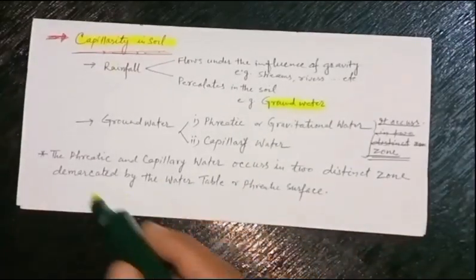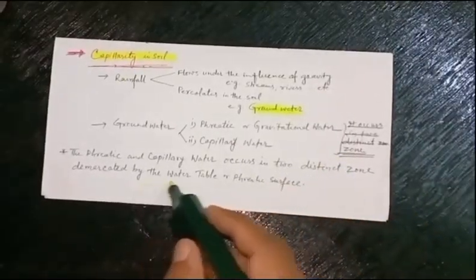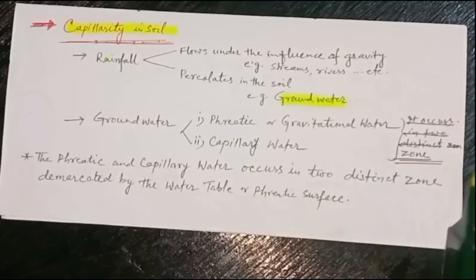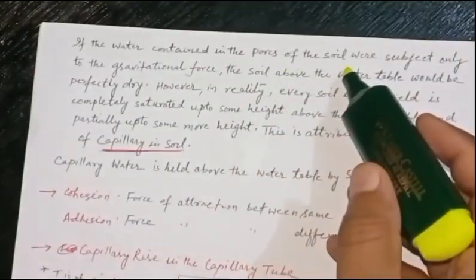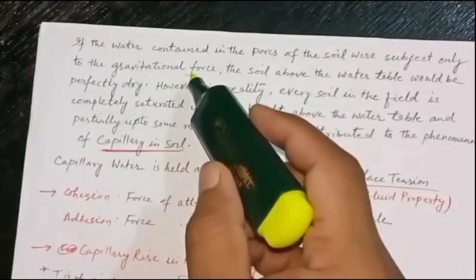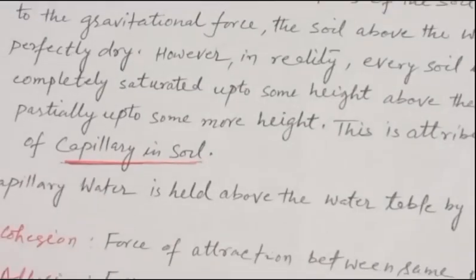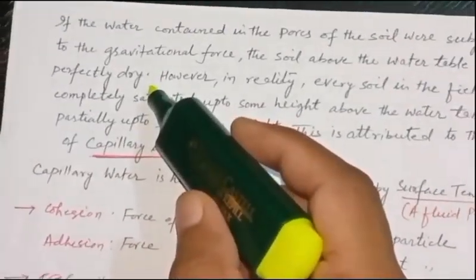The ferritic or non-capillary water occurs in two distinct zones demarcated by the water table or ferritic surface. If the water contained in the pores of the soil were subject only to gravitational force, the soil above the water table would be perfectly dry.